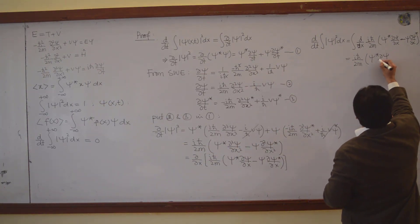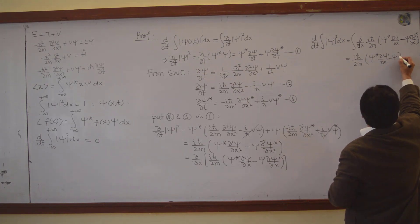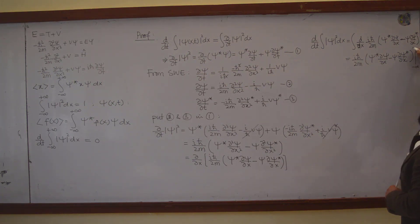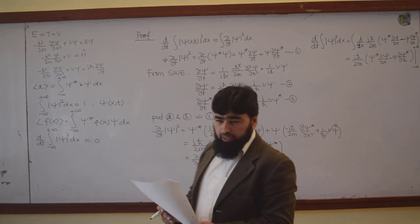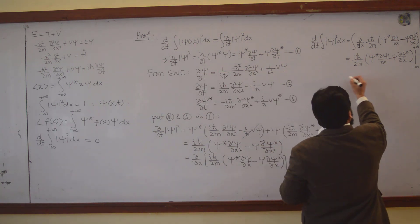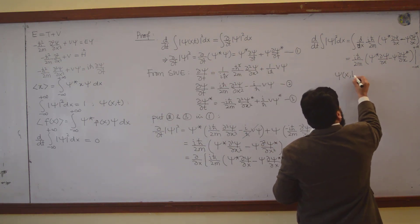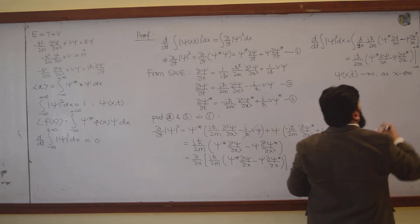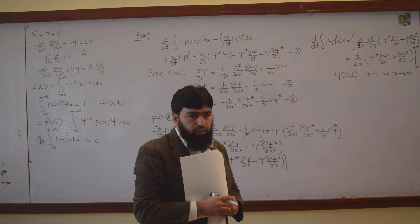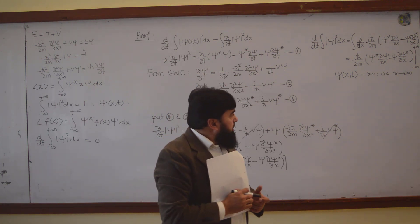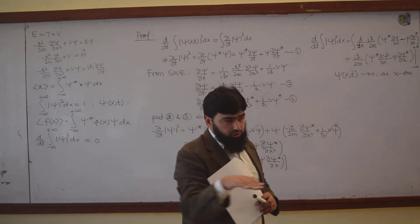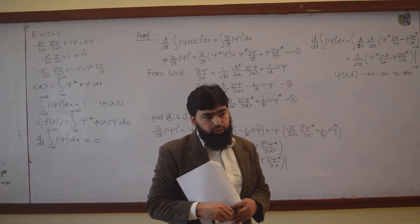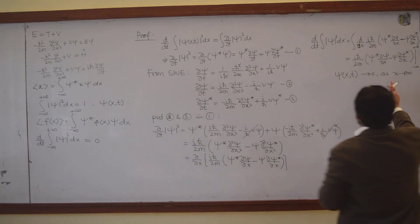ψ* ∂ψ/∂x minus ψ ∂ψ*/∂x, with integration limits from minus infinity to plus infinity. Now, I know that the wave function ψ(x,t) goes to zero as x goes to plus or minus infinity. Because the wave function is a distribution and this distribution goes to zero as x goes to infinity. Such a wave function I call a normalized wave function.